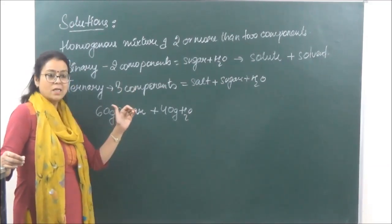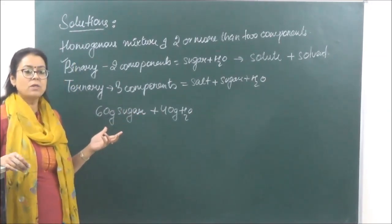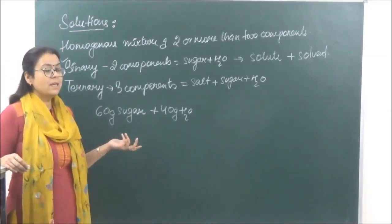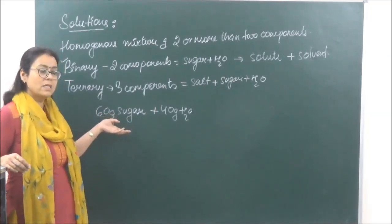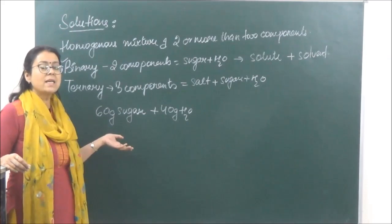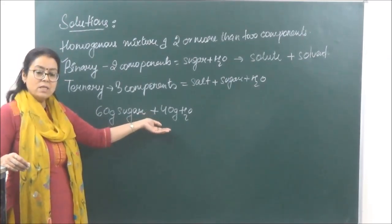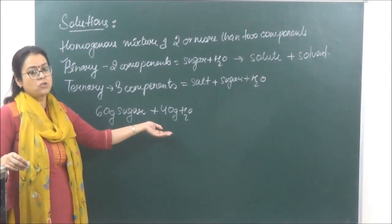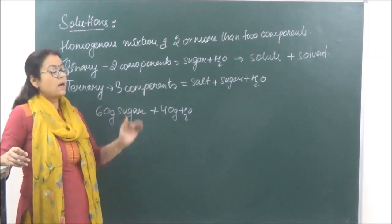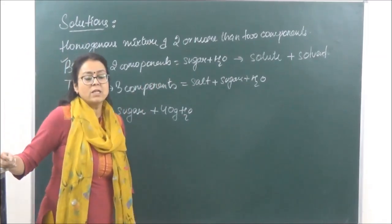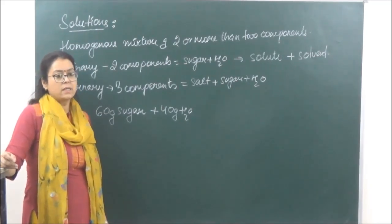Yahan pe definition galat ho gayi: ki solute is anything which is in lesser quantity and solvent is anything in larger quantity. Yahan pe sugar is in larger quantity but we are still taking it as a solute. And water is in lesser quantity but we are still taking it as a solvent. So for concentrated solutions, humara jo rule hai ki solute kam hona chahiye aur solvent zyada - woh kaam nahi karta.